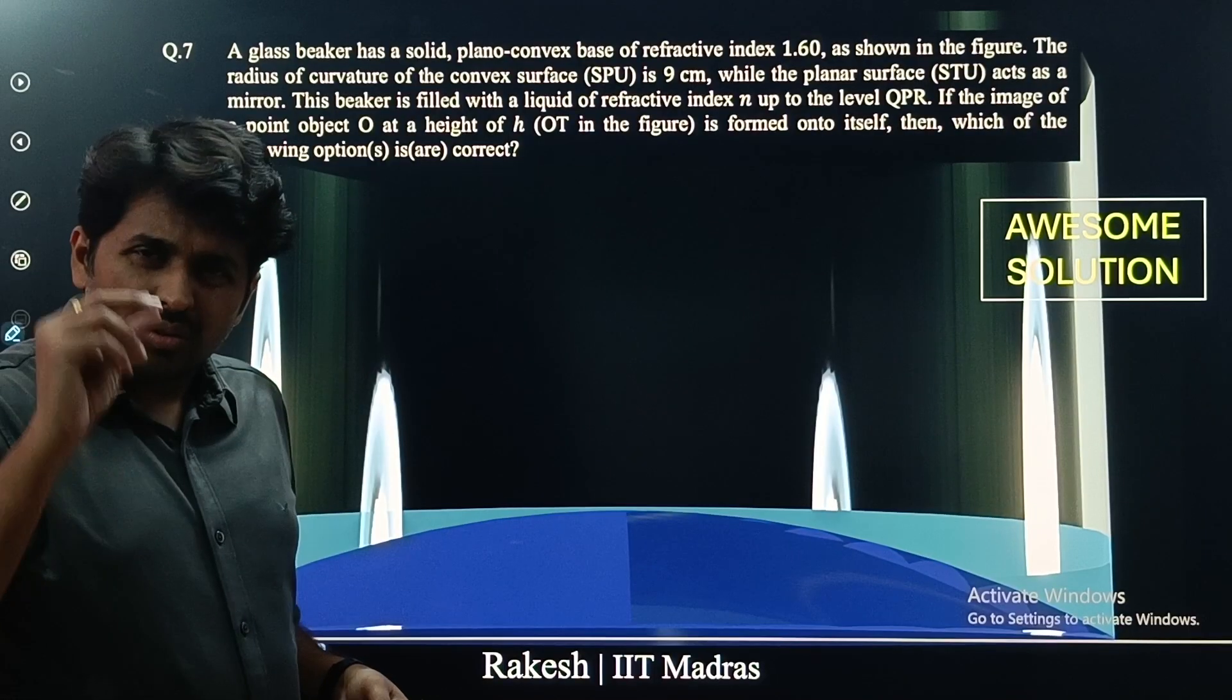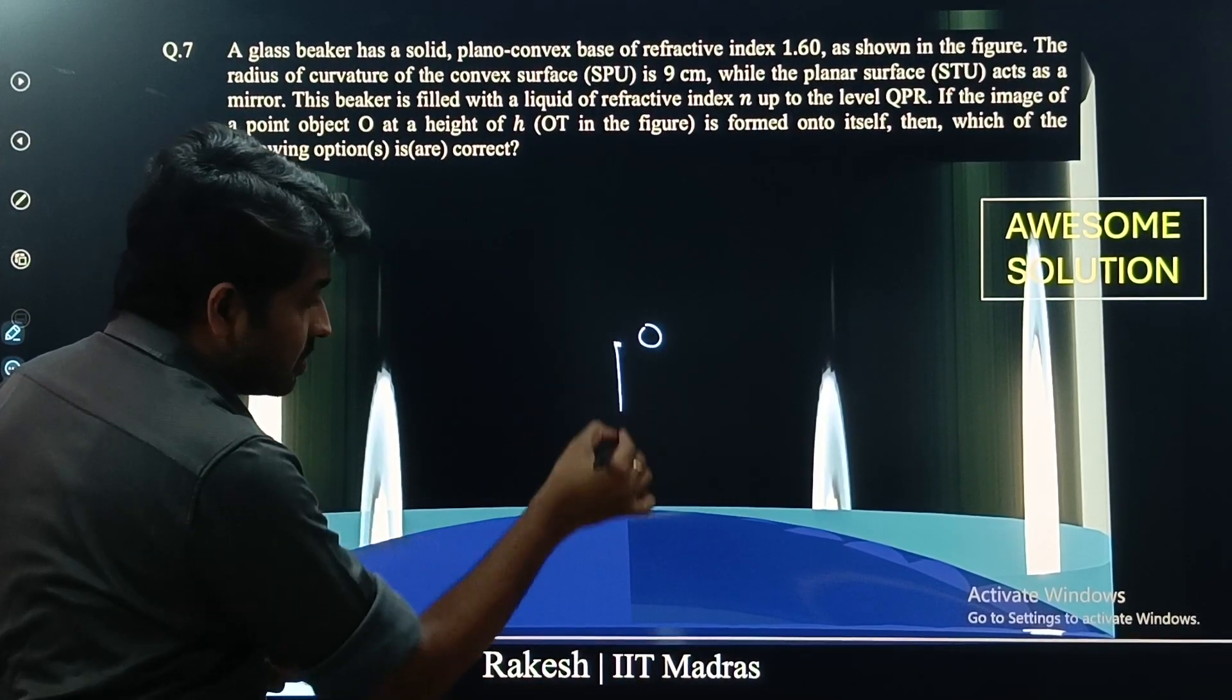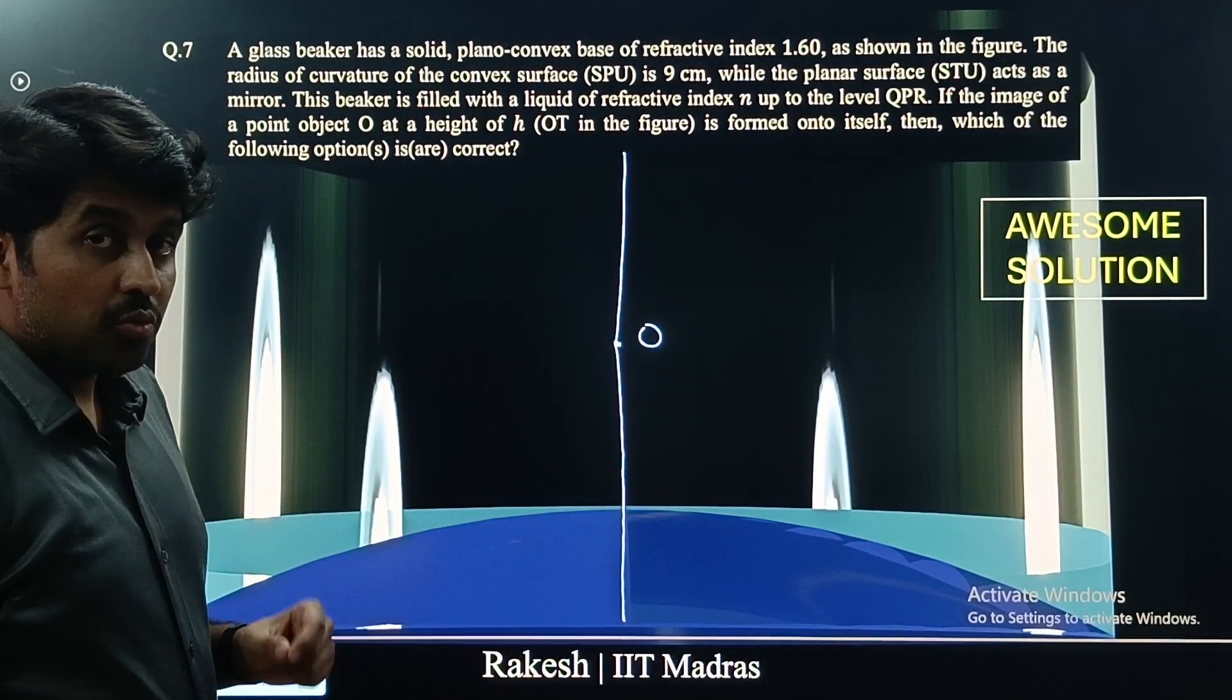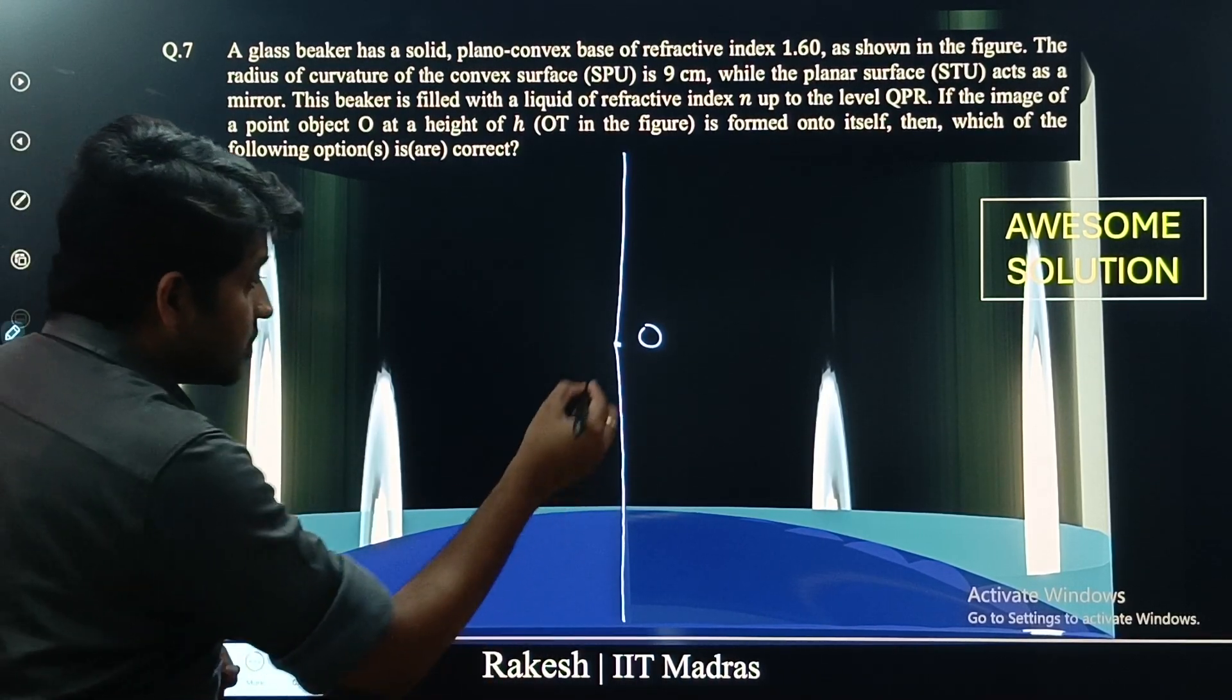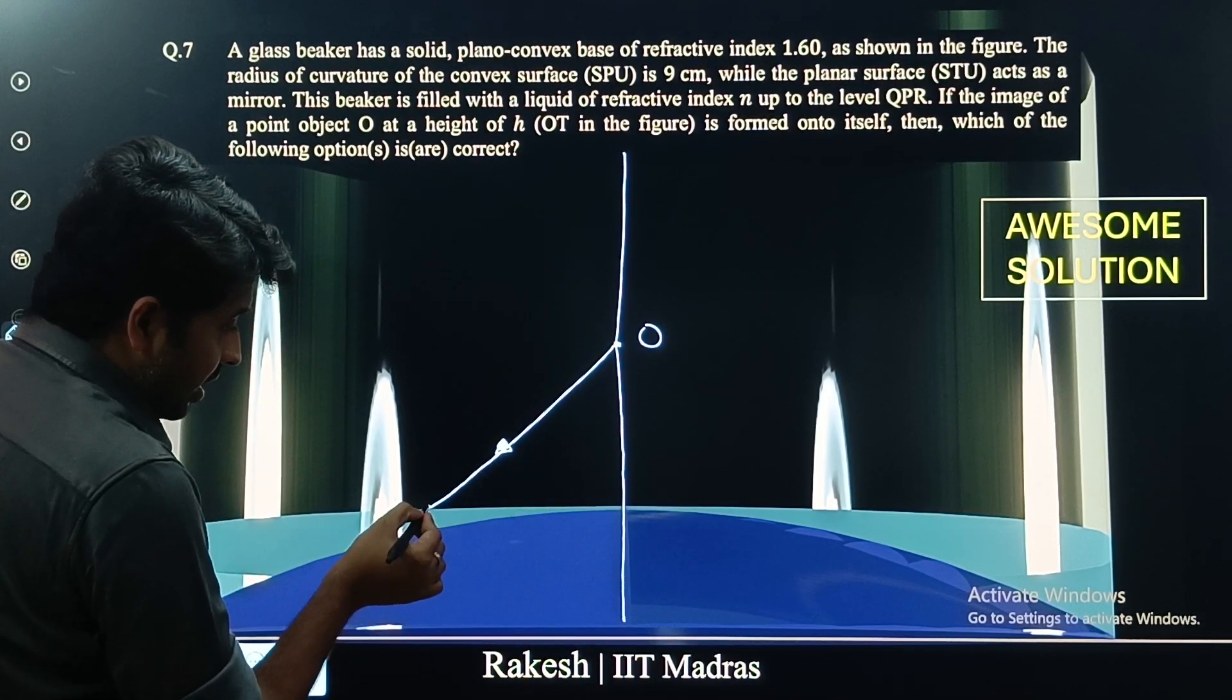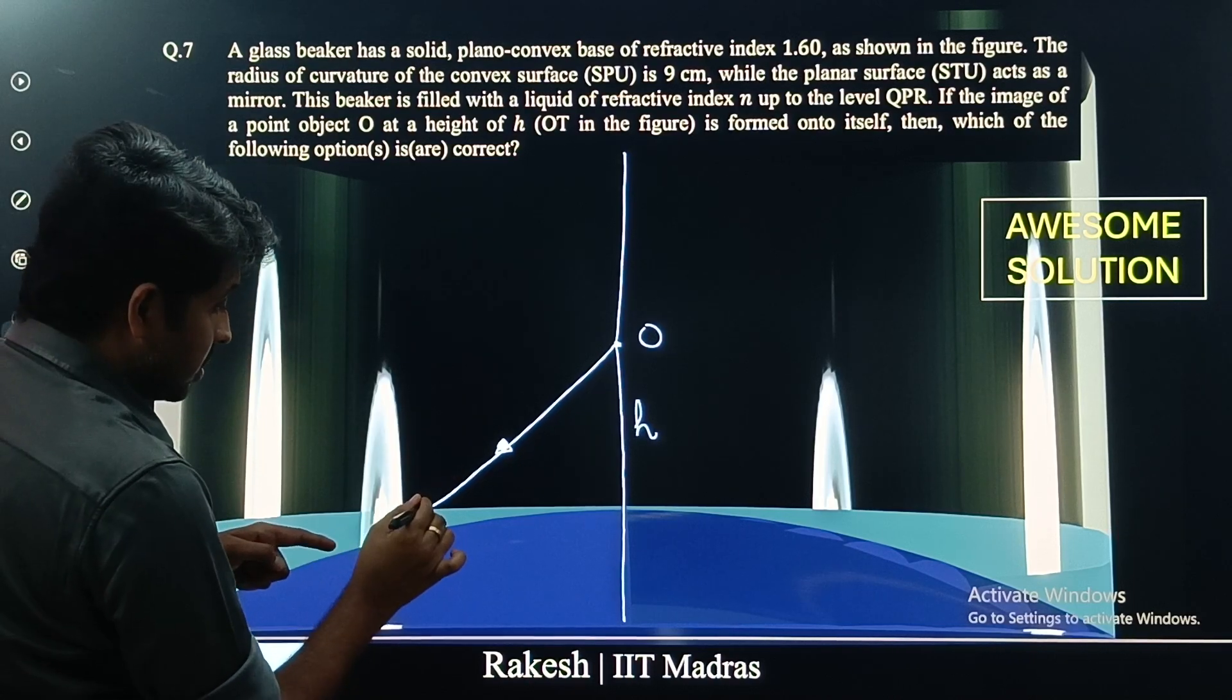Let us now move on to the awesome solution. Let's say our object is here. This is the principal axis. I am going to consider a ray coming from this object and getting refracted here. This is one ray. After refraction here, where will this ray meet? Let's say this is h. Where will this ray meet?